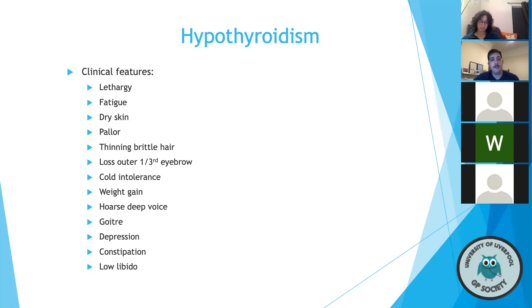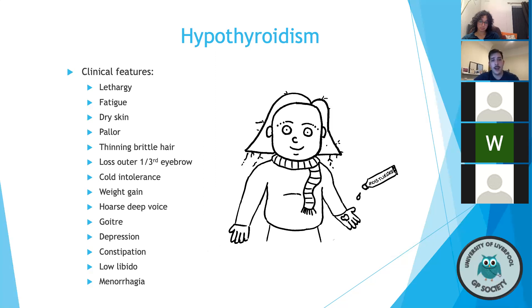A helpful mnemonic: a patient with a low-functioning thyroid has low energy, low moisture in the skin, low hair, low temperature intolerance, a low voice, low bowel activity, and low libido. There's a little cartoon to demonstrate some common features of a patient with hypothyroidism — same disclaimer as before: not representative of all, but it outlines the key clinical features.